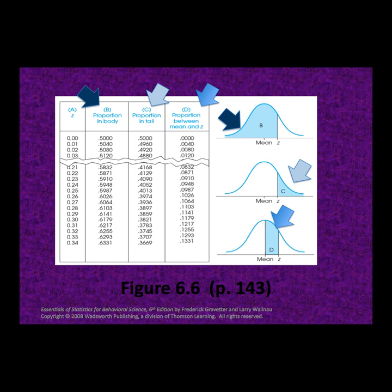This slide shows an excerpt from the standard normal distribution table found in the back of your book. Note that this table has four columns. The leftmost column is the z column where you will look up z-scores. Column B contains the proportion in the body, or the larger proportion. Column C represents the smaller proportion or the proportion in the tail. Column D represents the proportion of data that falls between the mean of 0 and that particular z-score. Depending on the problem, we will be looking at various columns of the z-table.